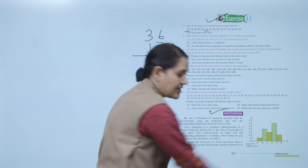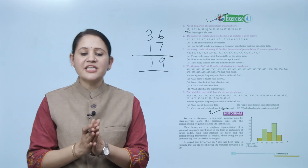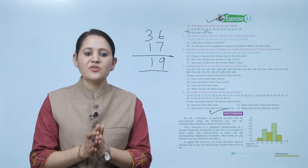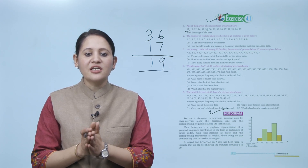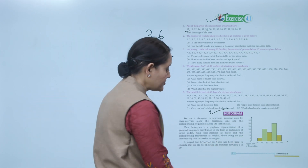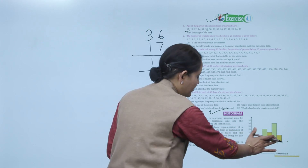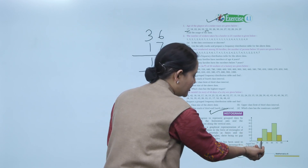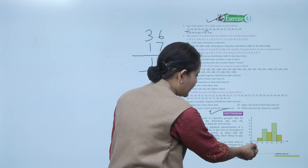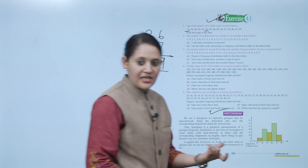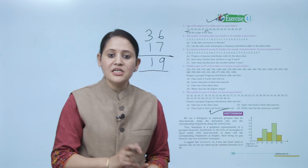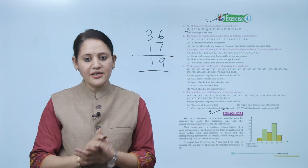There will be no gap between bars in a histogram. The jagged line on the x-axis indicates that we are not showing the numbers between 0 and 30. The gap between 30 to 40 is 10, but this jagged line shows that we are skipping the representation from 0 to 30.